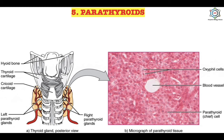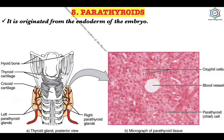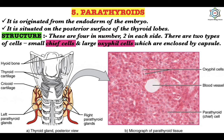The fifth endocrine gland is the parathyroid gland. It originates from the endoderm of the embryo and is situated on the posterior surface of the thyroid lobes. According to its structure, there are four glands — two on each side. There are two types of cells: small chief cells and large oxyphil cells, enclosed by a capsule.